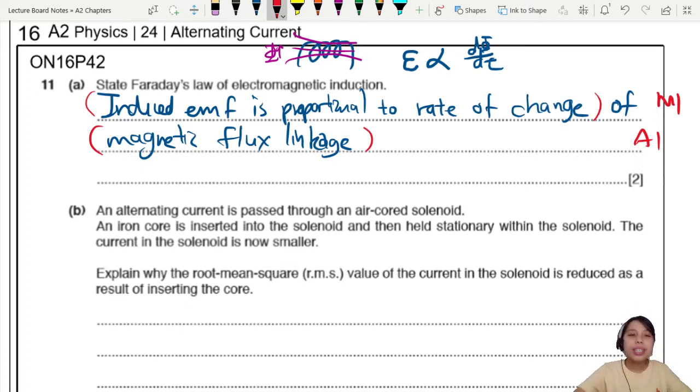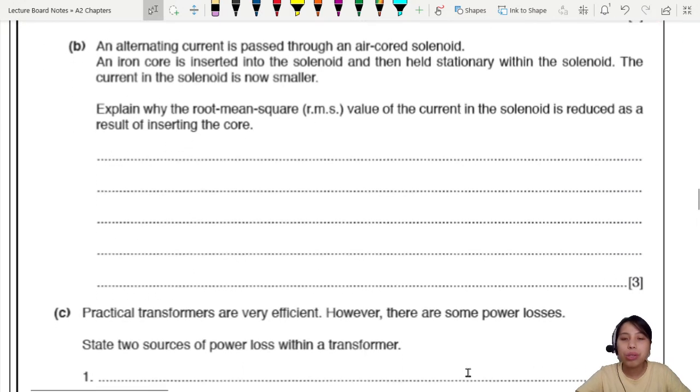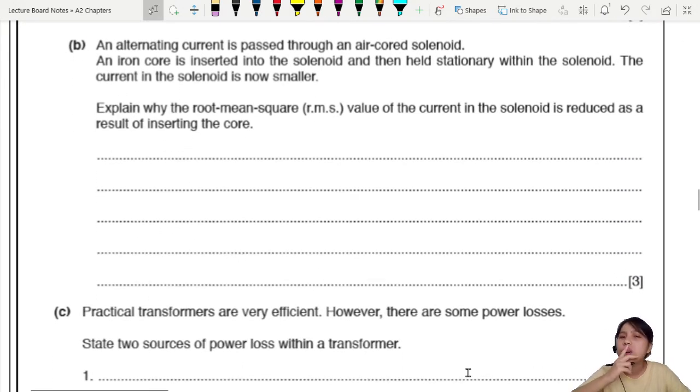Now we go to the air-core solenoid. An alternating current is passed through an air-core solenoid. Suddenly iron-core inserted and held stationary. The current in the solenoid is now smaller. What magic is this? Here's a scenario.